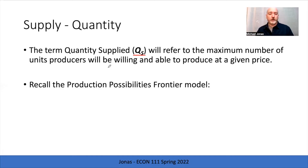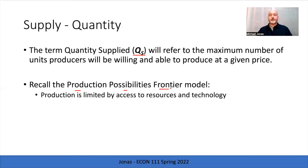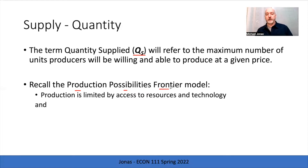This brings us back to familiar territory from the production possibility frontier model, which was all about the capabilities of a producer to create output. The quantity supplied — the number of units of a product we're capable of producing — is a function of availability of resources: land, labor, capital, and our efficiency, our production technology. When we think of the PPF shifting out or shifting in, we can also think of it as affecting a firm's quantity supplied at a specific price.